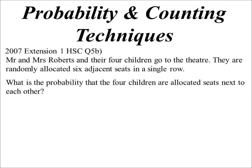So let's have a look at some probability questions that have appeared over the past few years in the HSC. So this one, Mr. and Mrs. Roberts and their four children are going to a theatre. They're randomly allocated six seats next to each other in a single row. What's the probability that the four children are allocated seats next to each other?